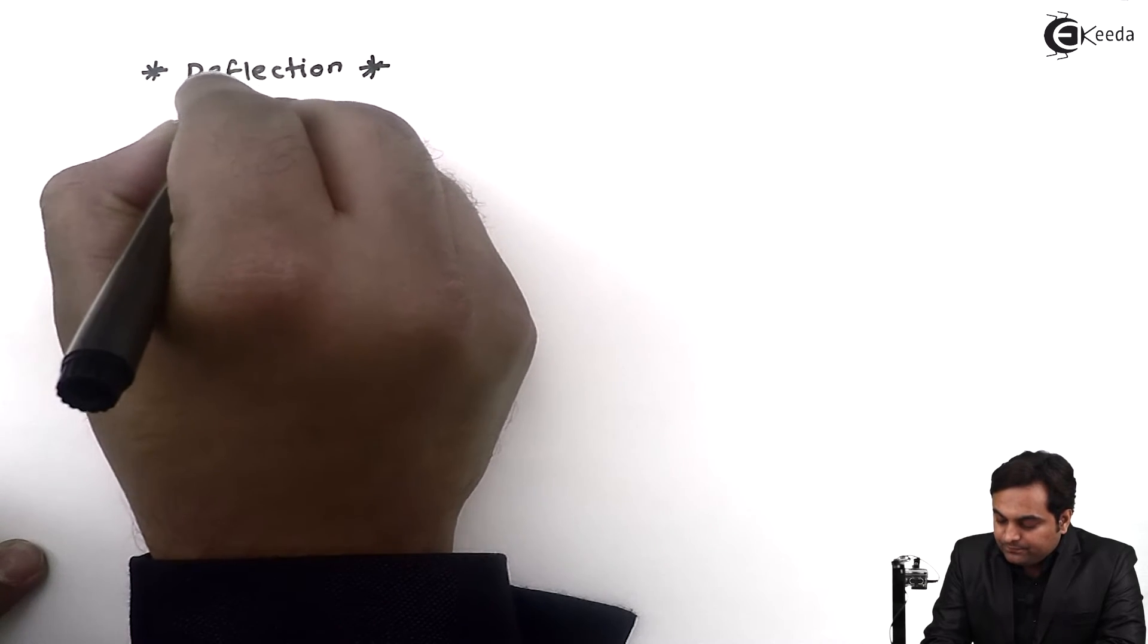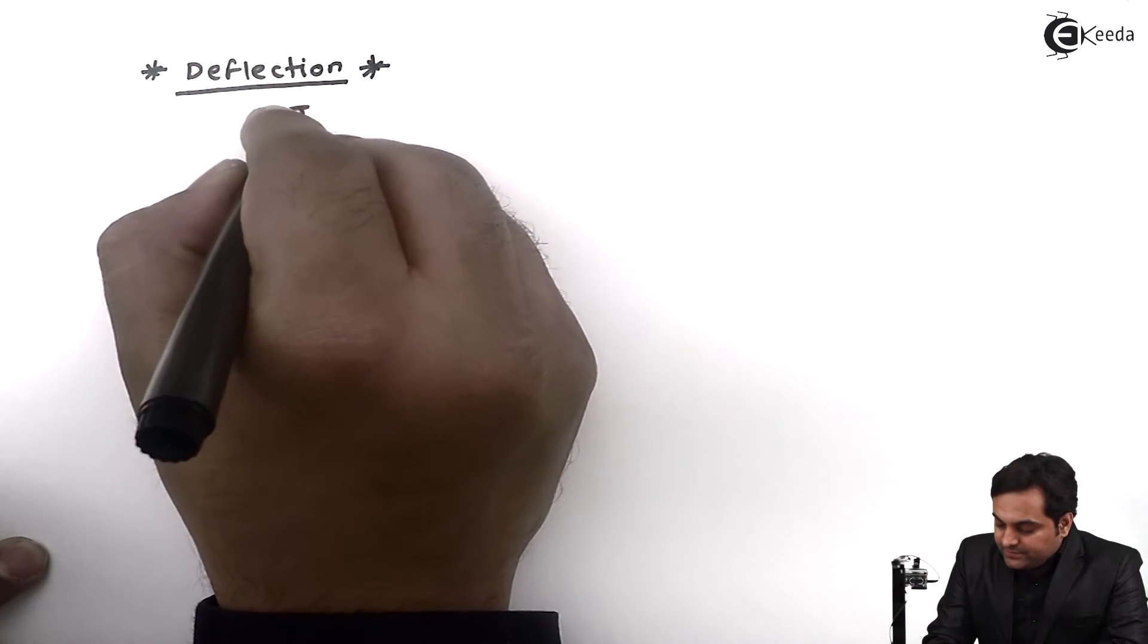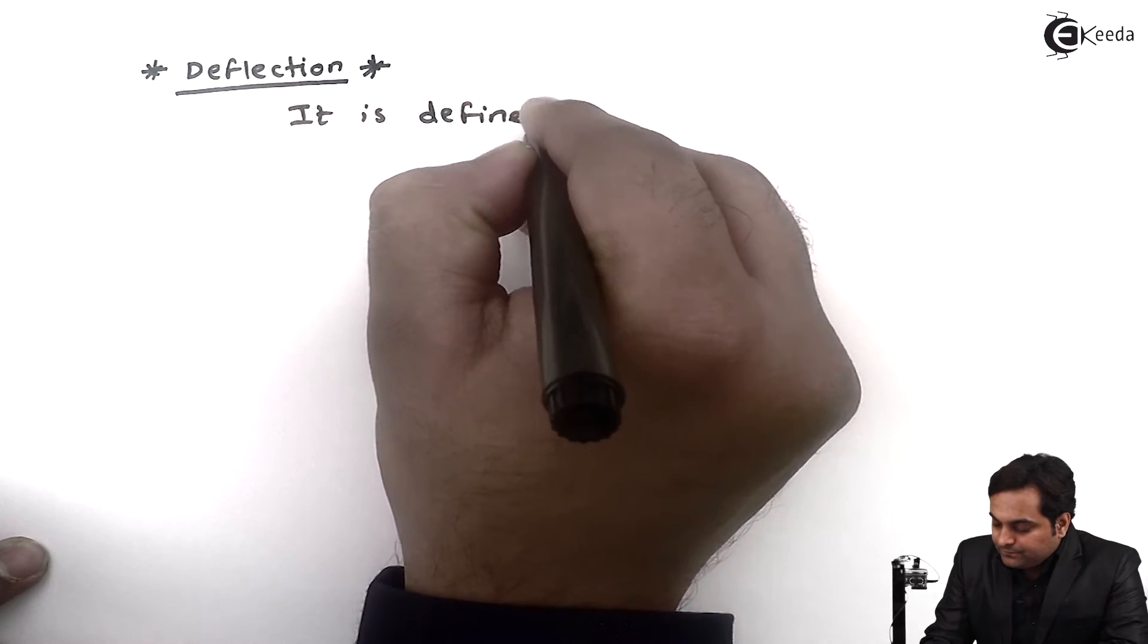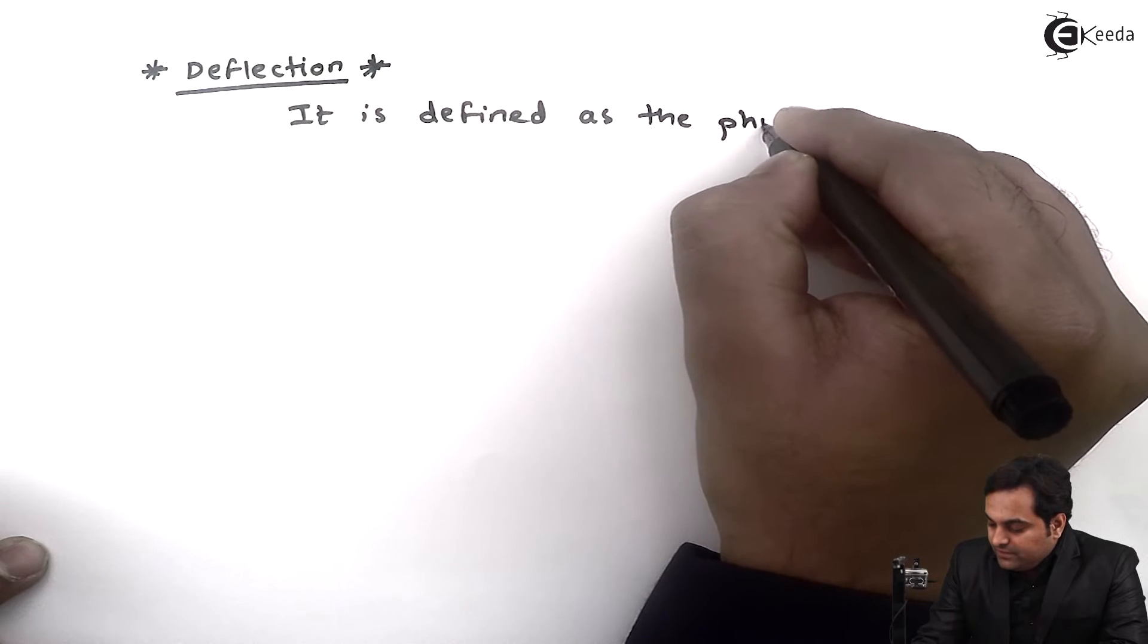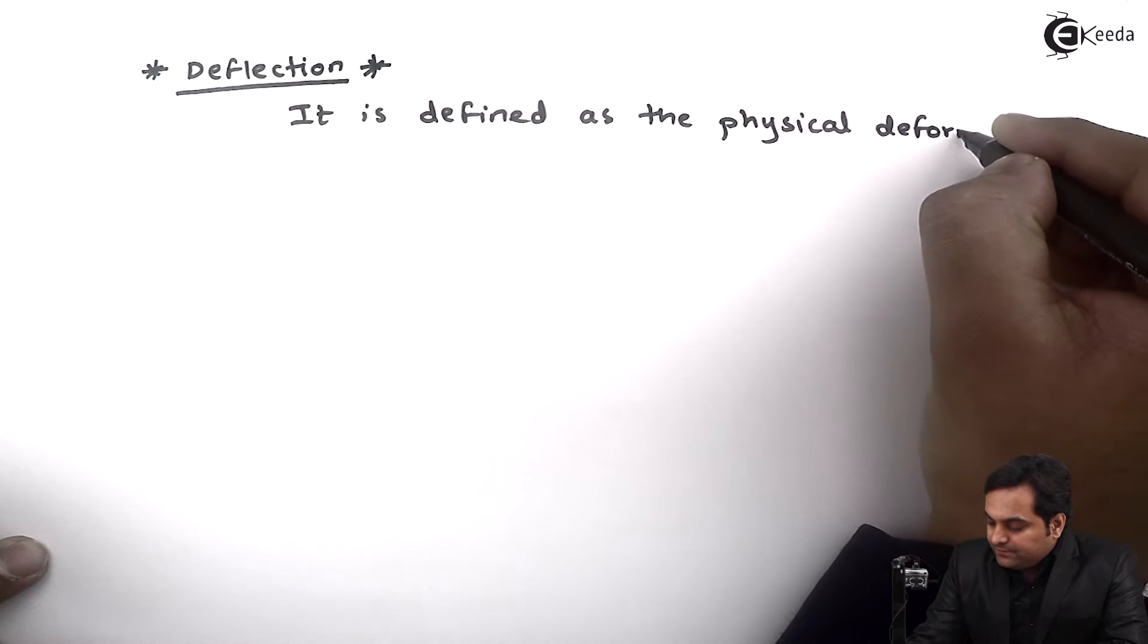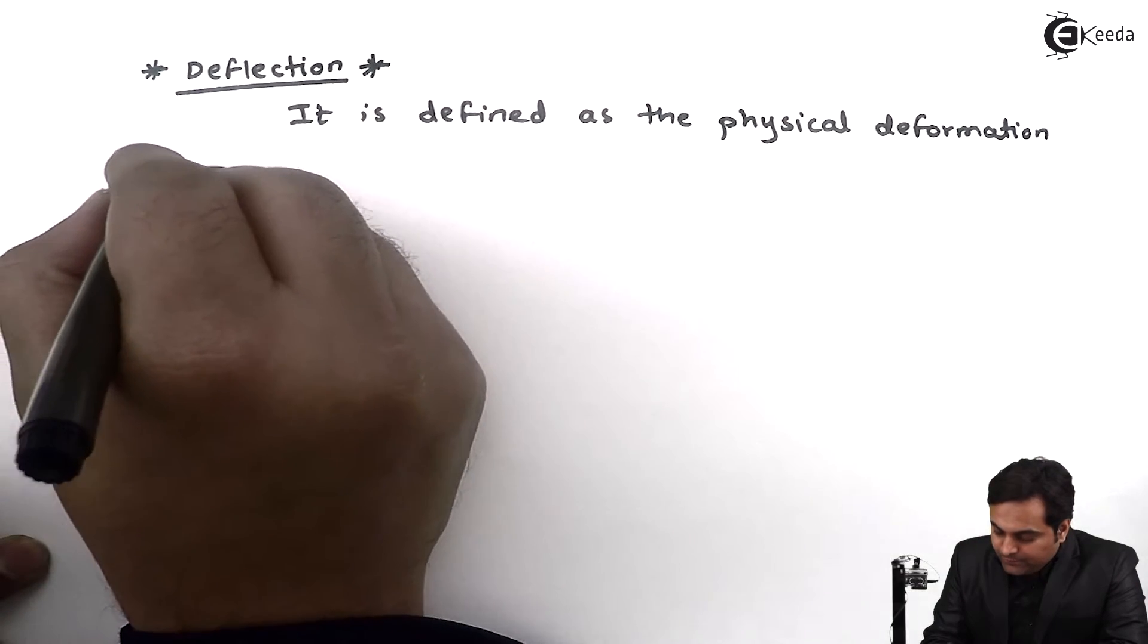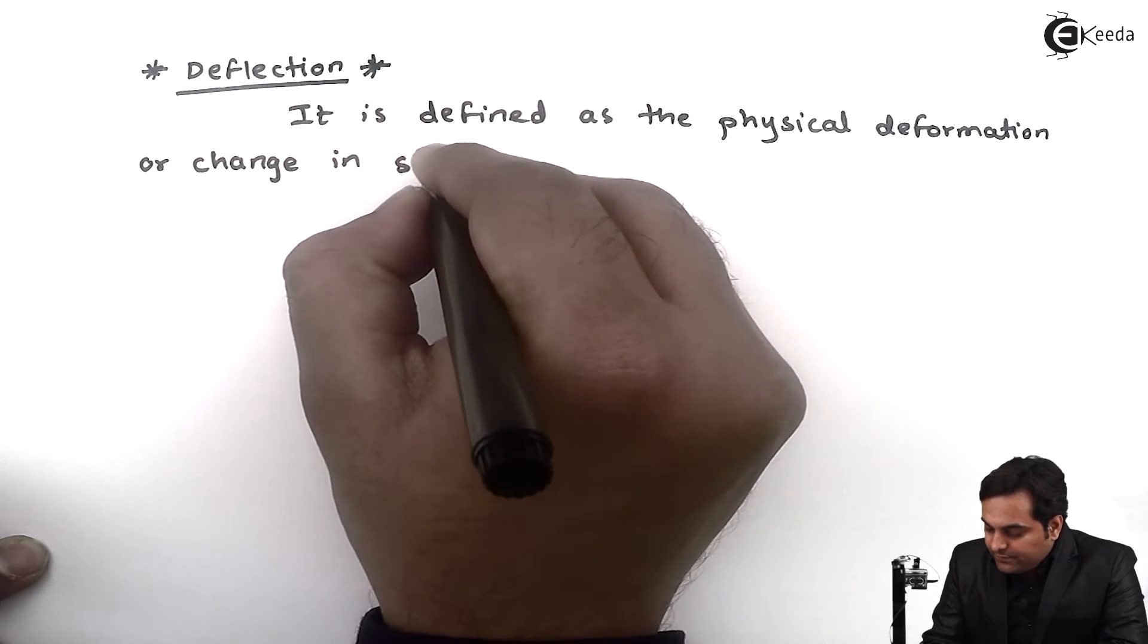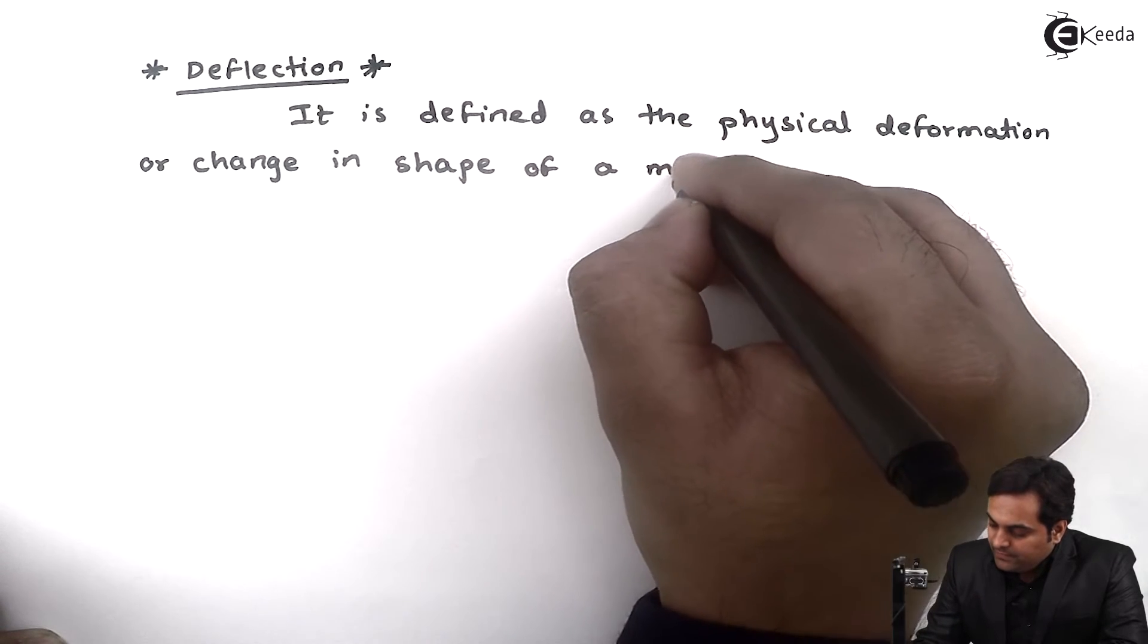Deflection: It is defined as the physical deformation or change in shape of a member.